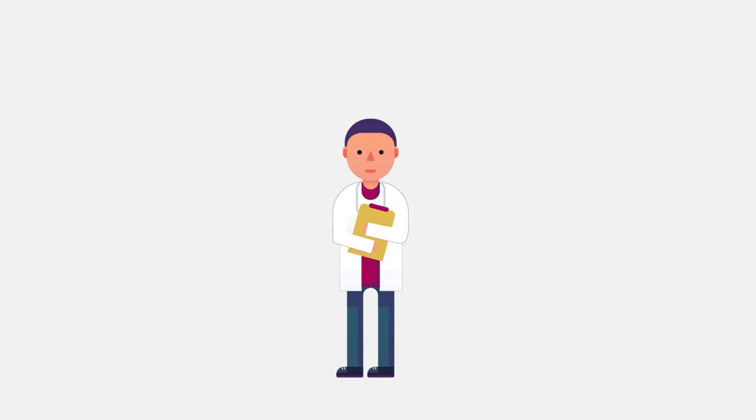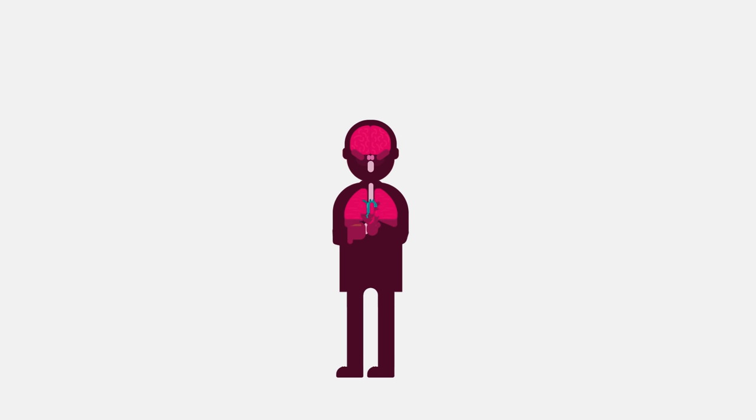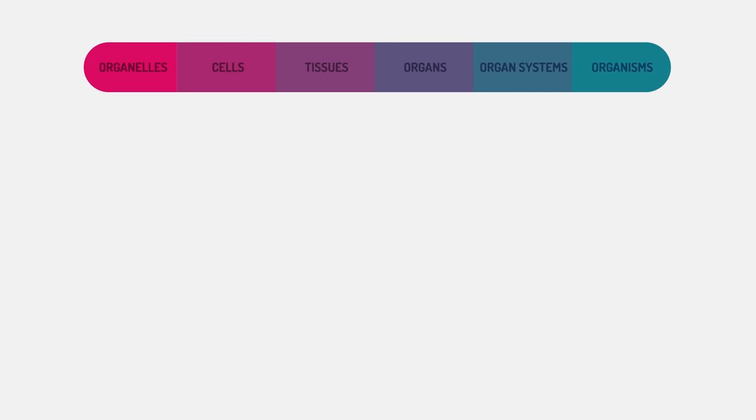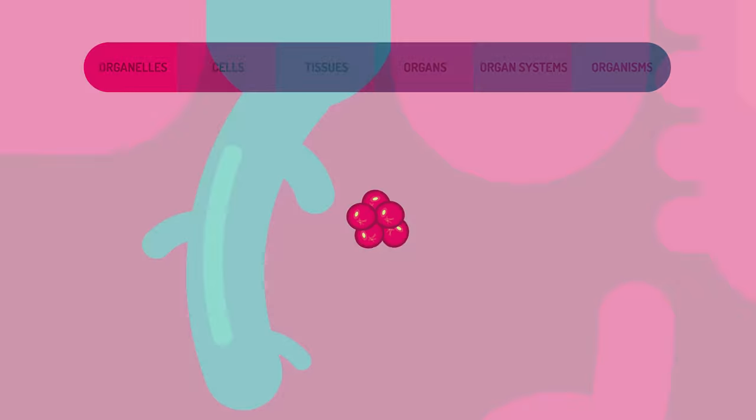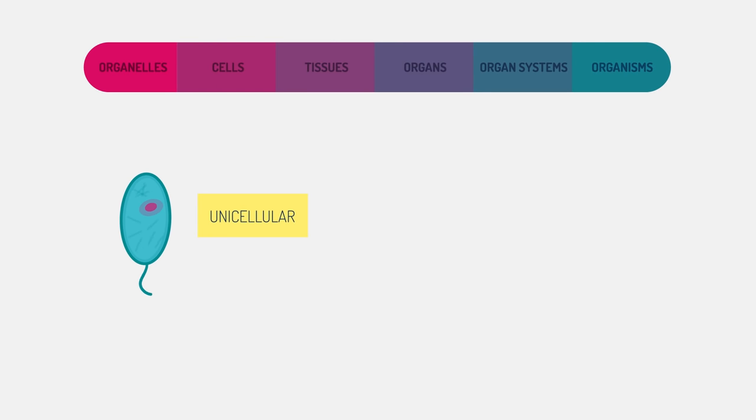Our body is a pretty fantastic piece of engineering, but how does it work? How do all the different components come together to keep us alive, functioning, and achieving our goals? In this video, we're going to look at the levels of organization in organisms, from smaller than cells to bigger than organs.